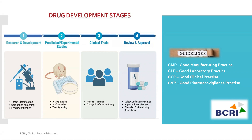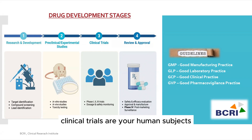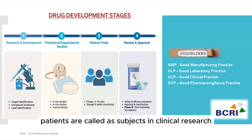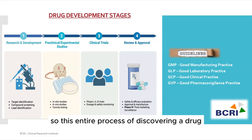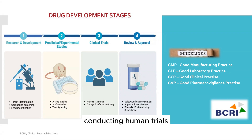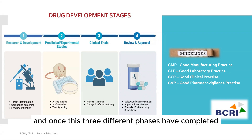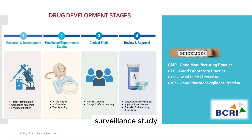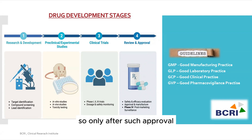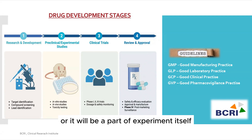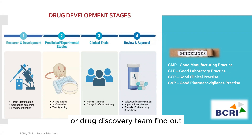Once a molecule is found, preclinical animal studies are conducted, and the data collected is used to proceed to clinical trials on human patients. Patients are called subjects in clinical research terminology. The entire process — from drug discovery through preclinical studies, human trials with three phases, and post-marketing surveillance — requires regulatory body approval before a molecule can be used to treat disease. This process takes approximately 10 to 15 years.